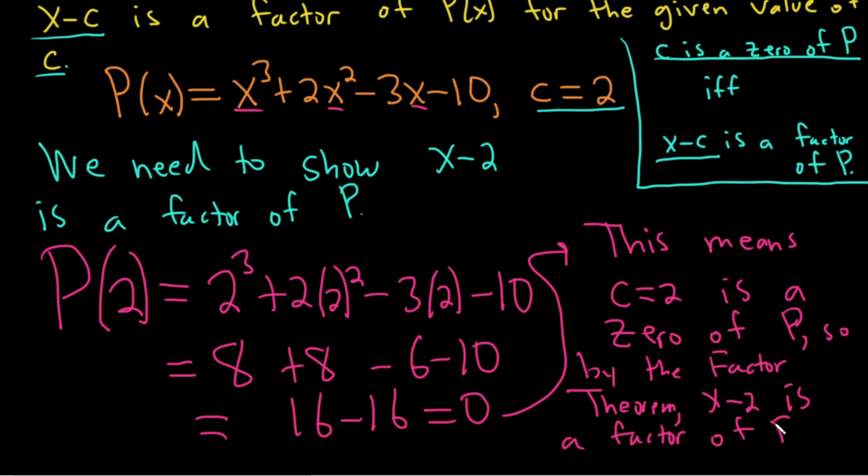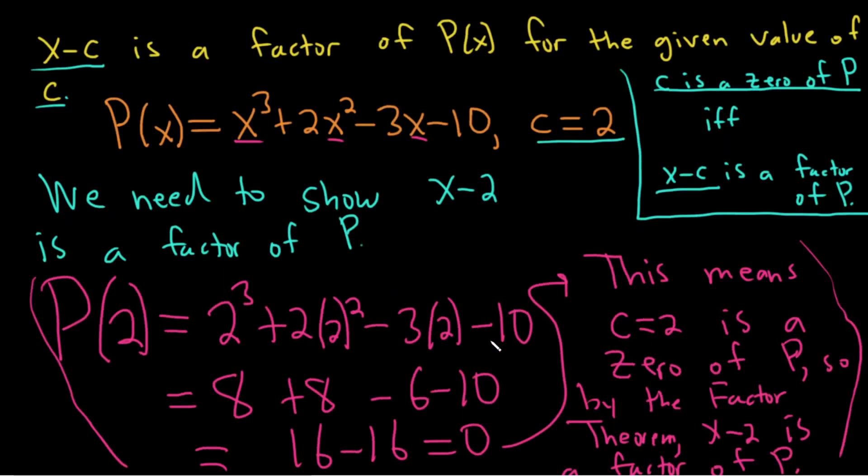It always helps to write a little explanation in problems like this because you're using a theorem. It's not a really hard problem, it's really easy. All you do is plug in 2 and make sure it's 0. But understanding what's going on is harder than actually just plugging in the number.